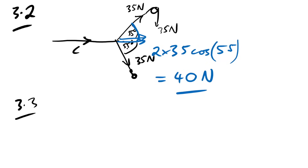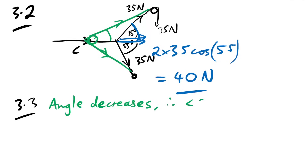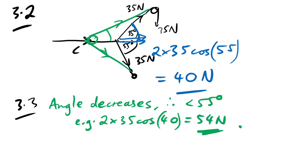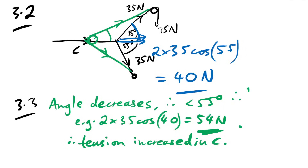Question 3.3: if pulley M is pulled to the left as the gate opens, the angle between the cables decreases to less than 55°. For example, 2×35×cos40° gives a larger tension than before. Therefore the horizontal component of tension in cable C increases.